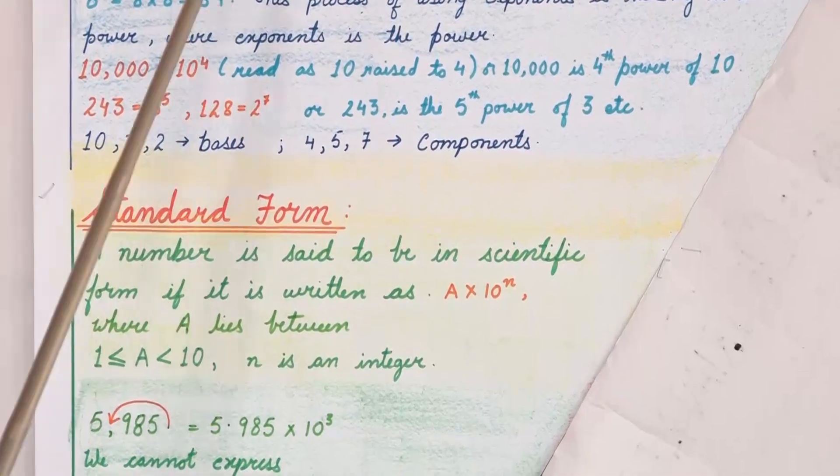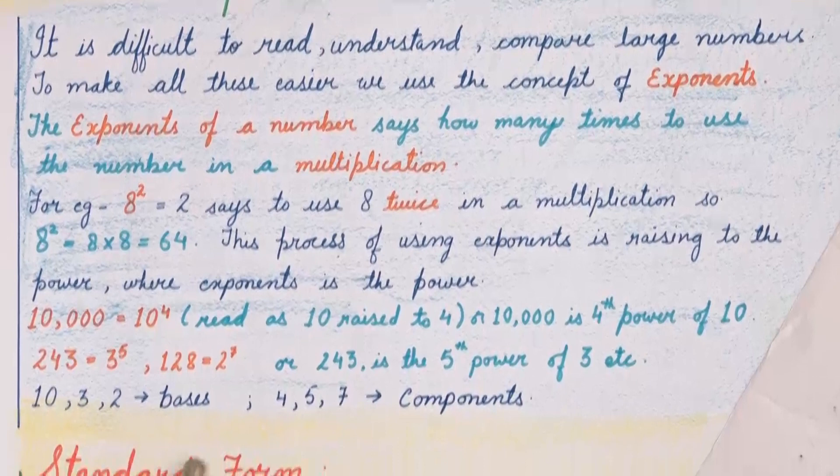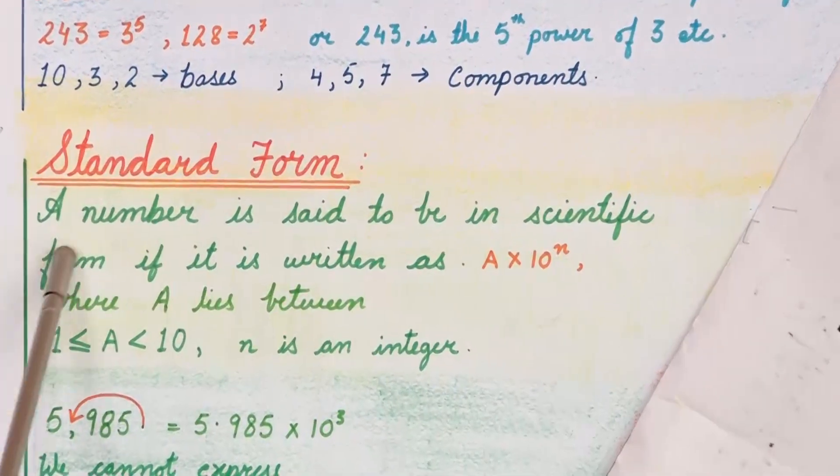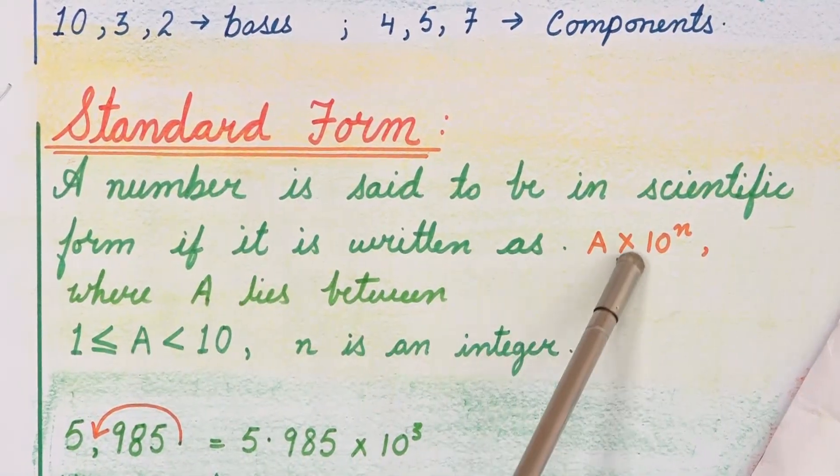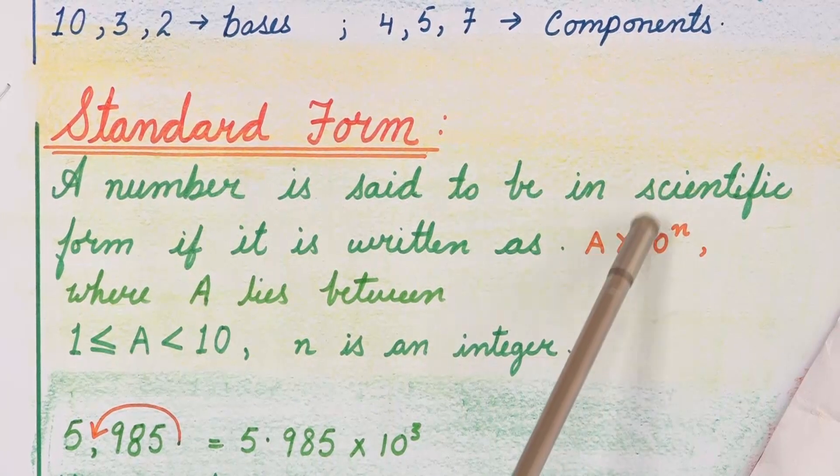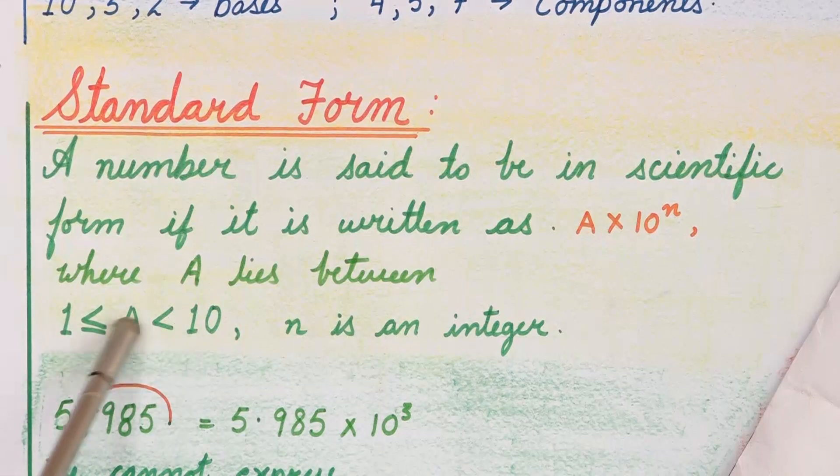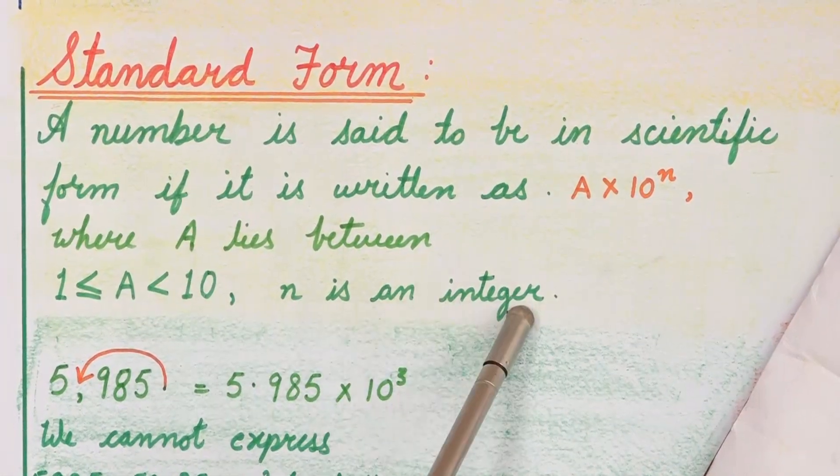Now the next concept that we will study in this chapter is standard form. What do you mean by standard form? A number is said to be in scientific form or standard form if it is written as a multiplied by 10 raised to the power n. This a is the number which lies between 1 and 10, and where n is an integer.